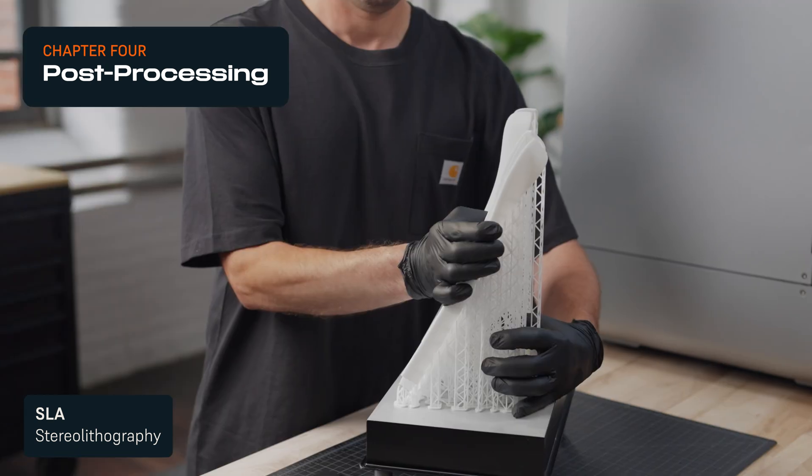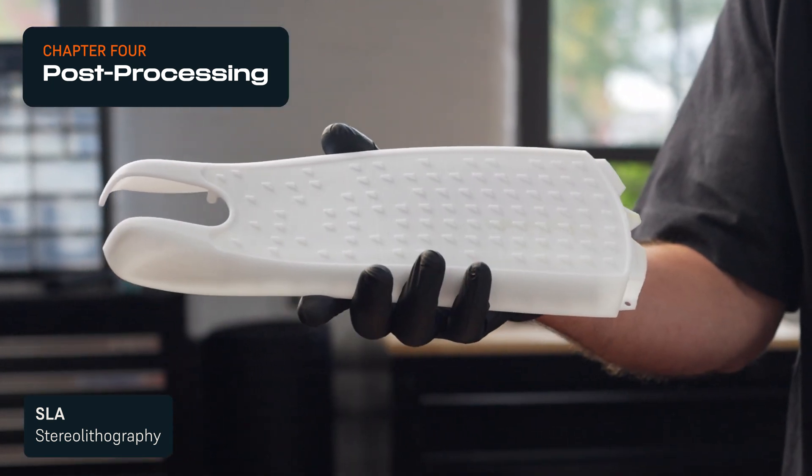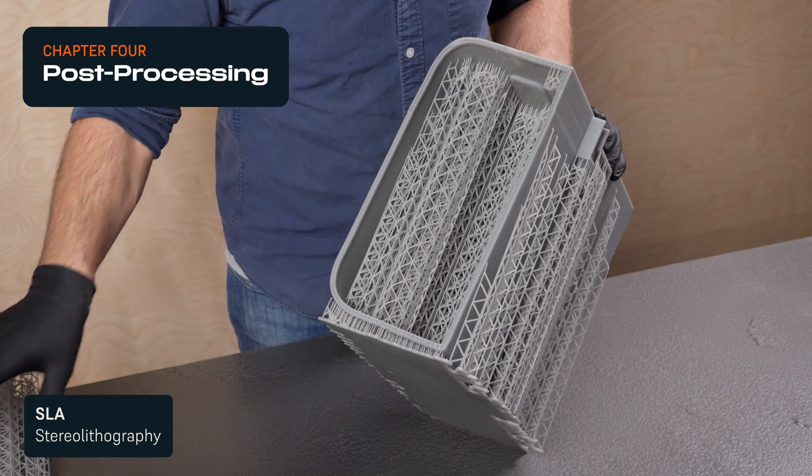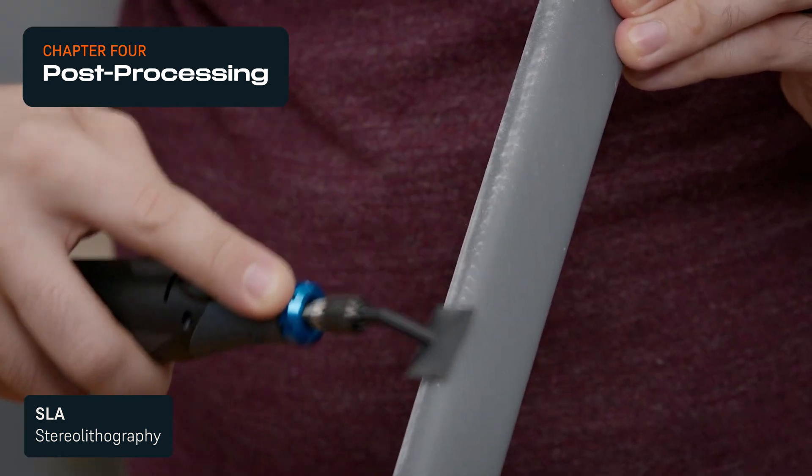Similarly to FDM, SLA parts that were printed on supports need these to be removed, but this can be fairly simple with advanced SLA 3D printers that use light touch supports, and the support marks are also easier to sand away.